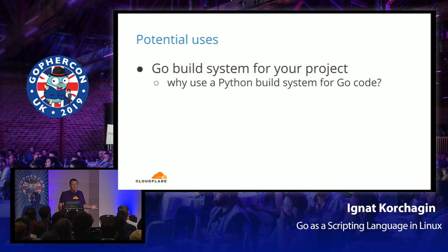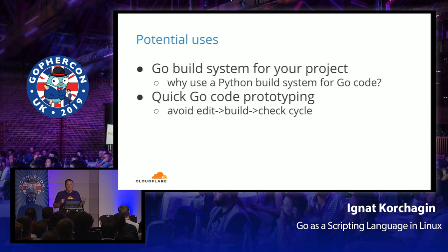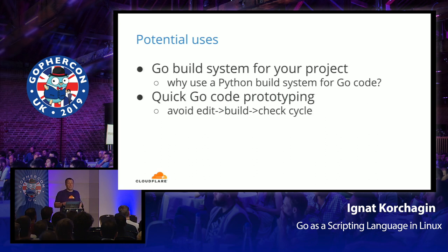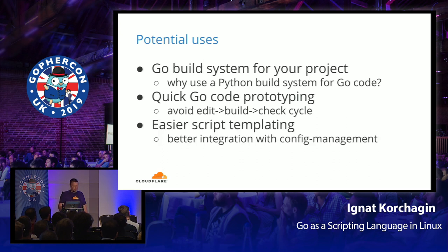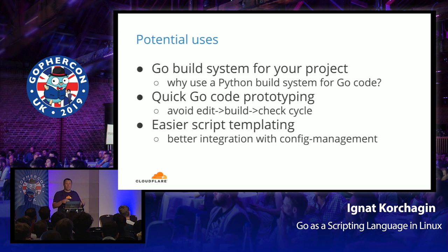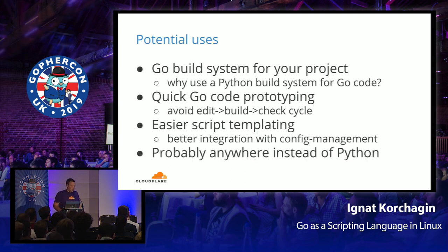Potential use cases: a Go build system for your project — if your project is in Go, why use a Python-based or bash-based build system? Quick Go prototyping — when you have a great idea and want a proof of concept, being able to execute Go files as scripts lets you skip some stages in your development cycle. Easier script templating — you can have a script template with a templating engine, which is useful for configuration management systems where everything is stored in text. And really anywhere else where you'd use Python nowadays — Go is much better.